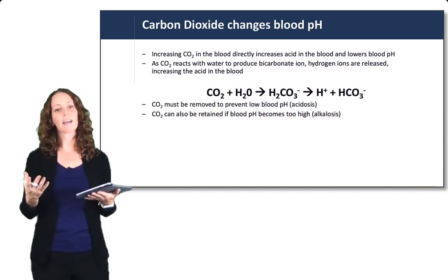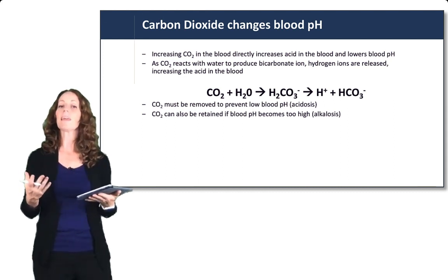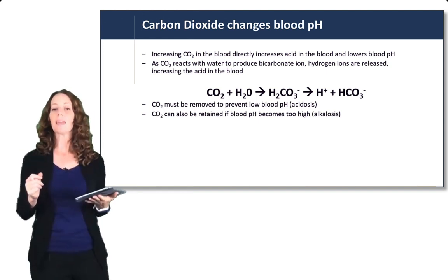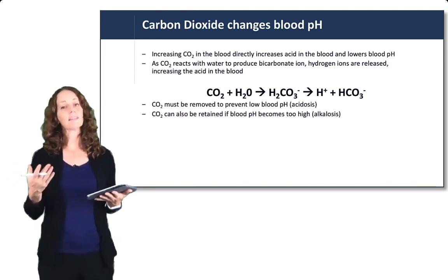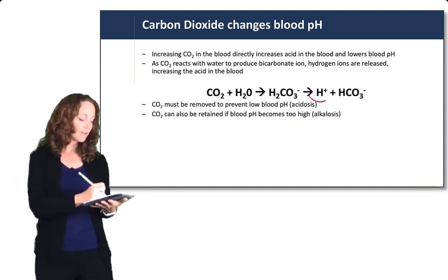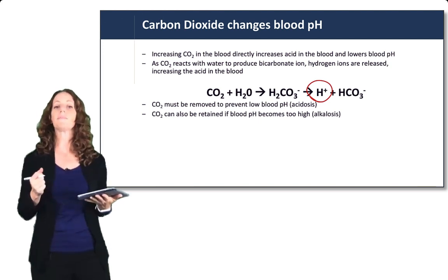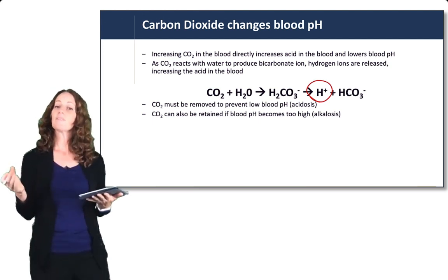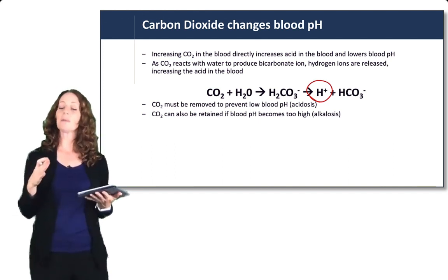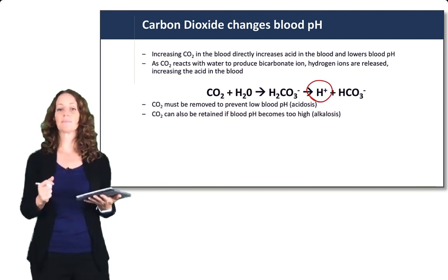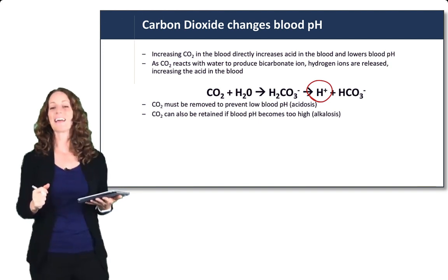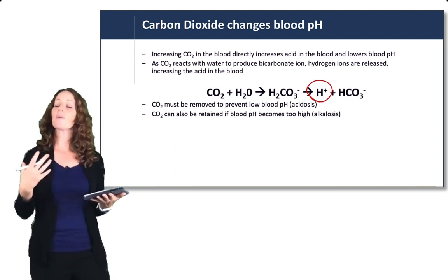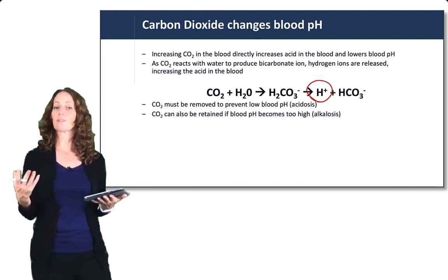What's important to understand about carbon dioxide transport is that carbon dioxide changes blood pH. Increasing CO2 in the blood directly increases acid in the blood and lowers blood pH. As the CO2 reacts with water to produce bicarbonate, free hydrogen ions are also released, increasing the acid level in the blood. CO2 must be removed to prevent low blood pH or acidosis. Conversely, CO2 can also be retained if blood pH is too high and we need to balance an alkalosis — this is how the respiratory system changes CO2 levels to balance acid-base.